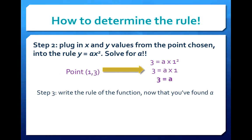And now all we have left to do is to rewrite the rule of the function with a. And it looks like this. f(x), or y, is equal to 3x squared.